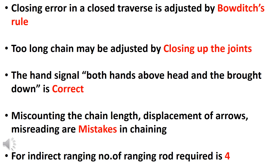Bowditch rule is called compass rule. It is based on angular and linear measurements. The other method is called the transit rule.